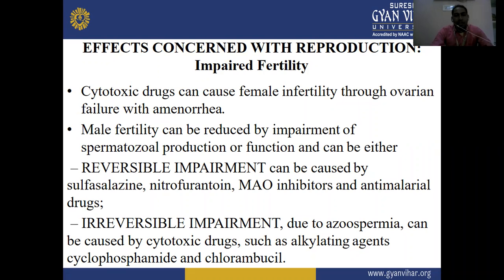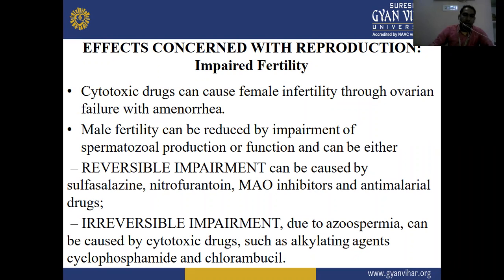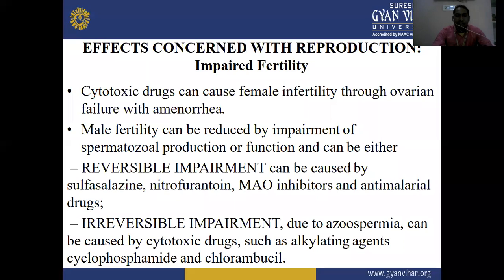Male fertility can be reduced by impairment of spermatozoa production or function, and can be either reversible or irreversible. Amenorrhea means the absence of the monthly menstrual period. Reversible impairment of male fertility can be caused by sulfasalazine, nitrofurantoin, MAO inhibitors — monoamine oxidase inhibitors — and anti-malarial drugs.